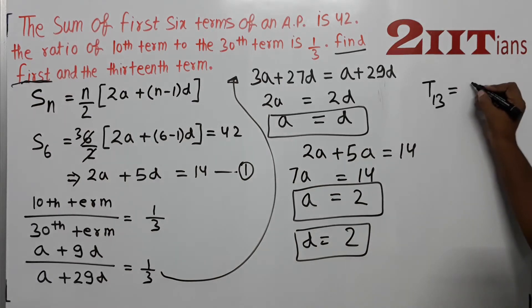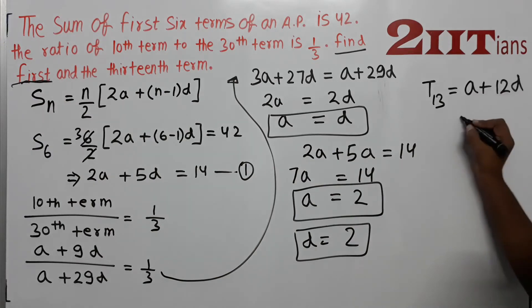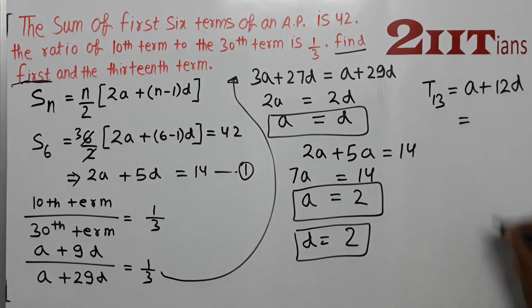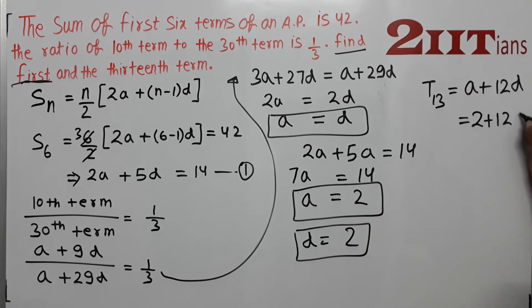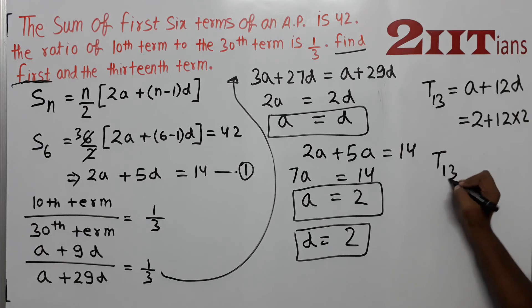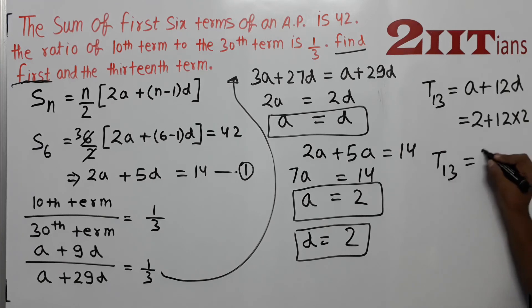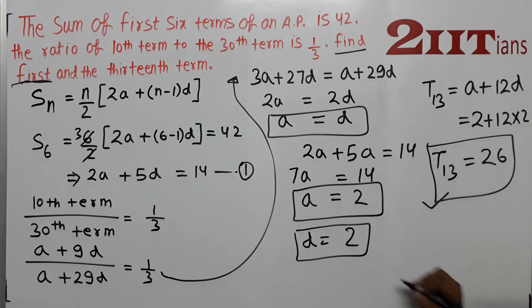The 13th term is A + 12D = 2 + 12 × 2 = 2 + 24 = 26. The common difference is also 2, confirming T13 = 26, which is our final answer.